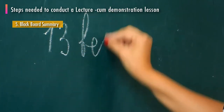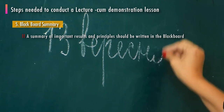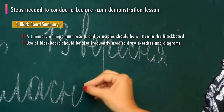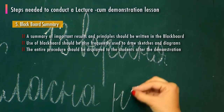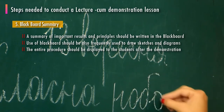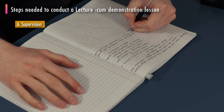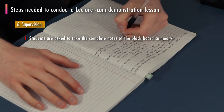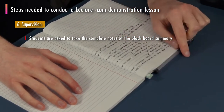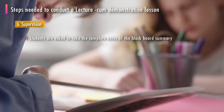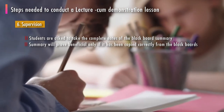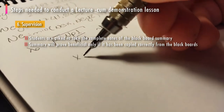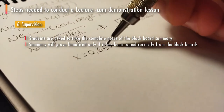The fifth step is the blackboard summary. A summary of important results and principles should be written on the blackboard. The blackboard should also be used frequently to draw sketches and diagrams, and the entire procedure should be displayed to students after the demonstration. The final step is supervision — students are asked to take complete notes of the blackboard summary including sketches and diagrams. The teacher must check notes frequently to ensure they have been copied correctly.